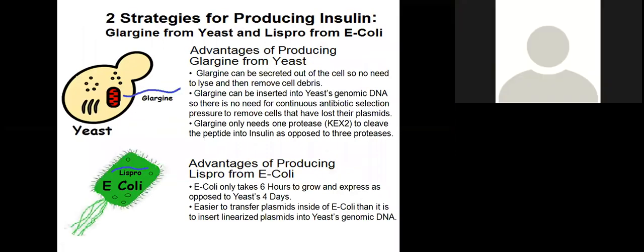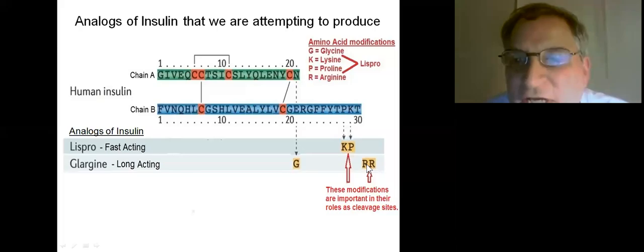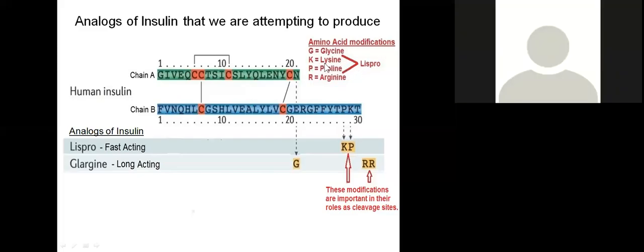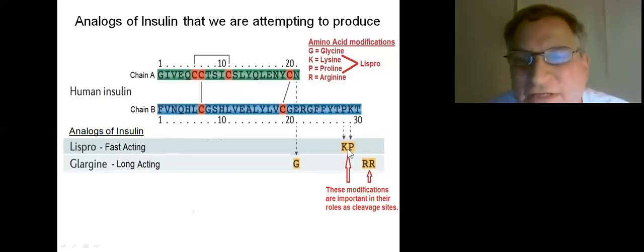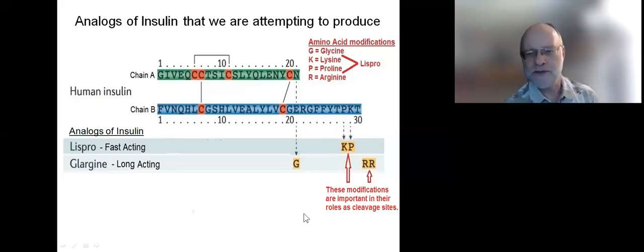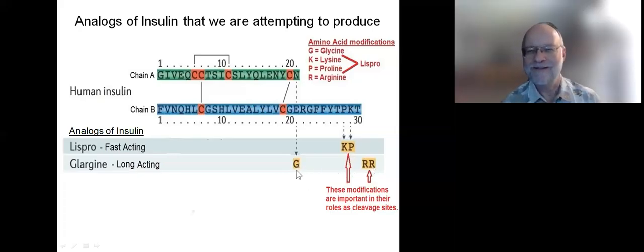A question was asked about the two R's at the end of Glargine — they are arginine. Regarding the K-P in Lispro: lysine is represented by the symbol K because leucine is already using the letter L, so another letter was needed. So K is lysine and P is proline. Similarly, the name Glargine comes from the amino acid substitutions: glycine and two arginines.